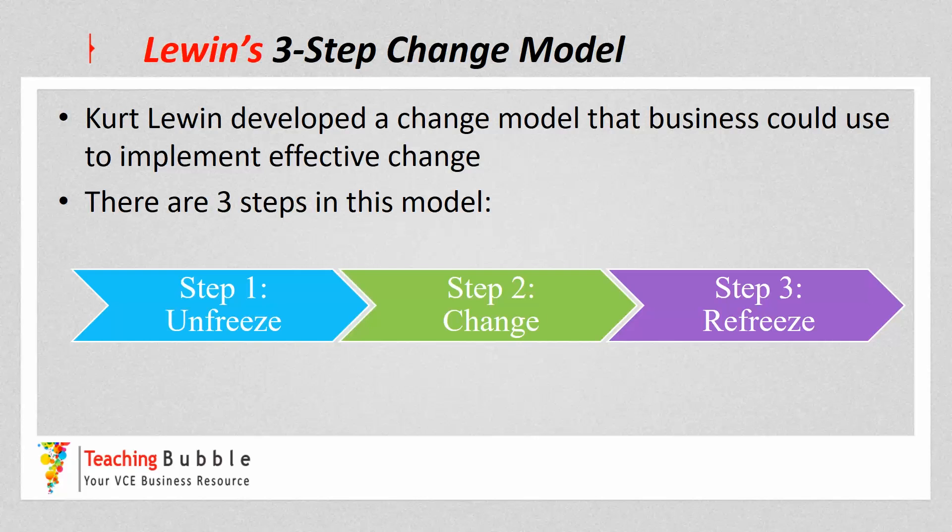It's a three-step model, so pretty straightforward. Step one is to unfreeze, step two is to implement change, and step three is to refreeze the business. We've spoken a lot about how businesses — and people within businesses — can find change difficult, and how it can therefore be a difficult process to implement change successfully. Businesses can use this three-step model to help them be successful when implementing change.